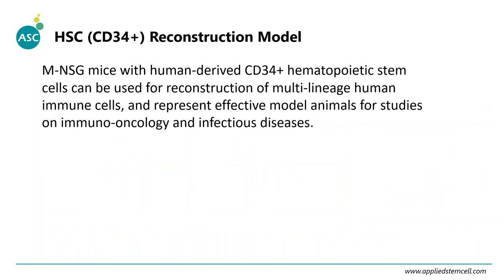Another humanized model involves NSG mice engrafted with human-derived CD34-positive hematopoietic stem cells. Compared to the PBMC model, the HSC or CD34 model produces various types of hematopoietic and immune cells — T cells, B cells, NK cells, and myeloid cells. Since the immune cells develop within the mouse and are tolerant to the host, no GvHD is observed, making this model suitable for long-term disease studies, with mice surviving more than one year.